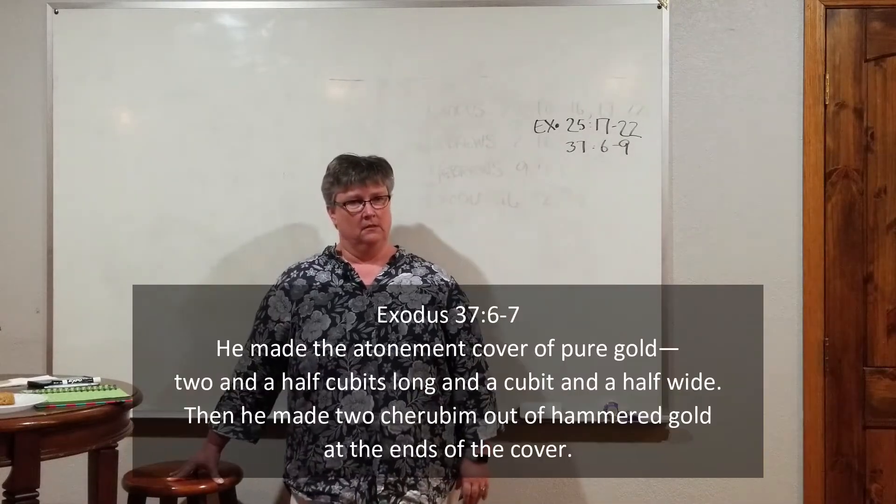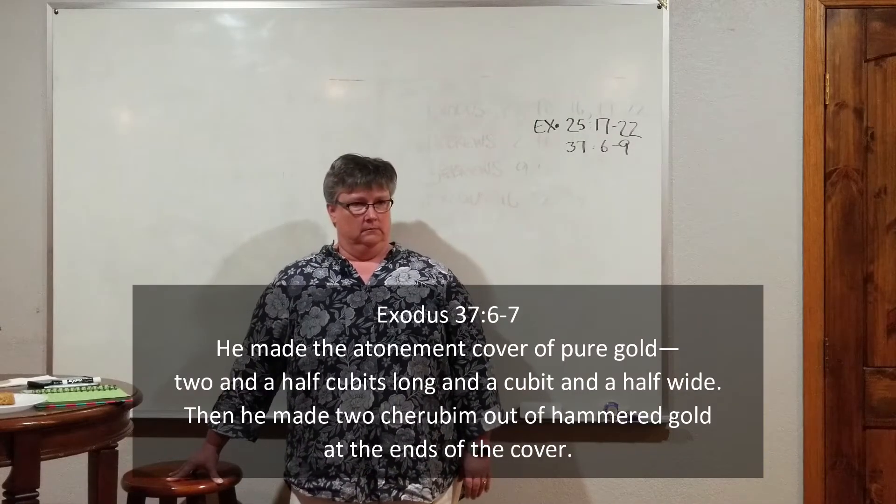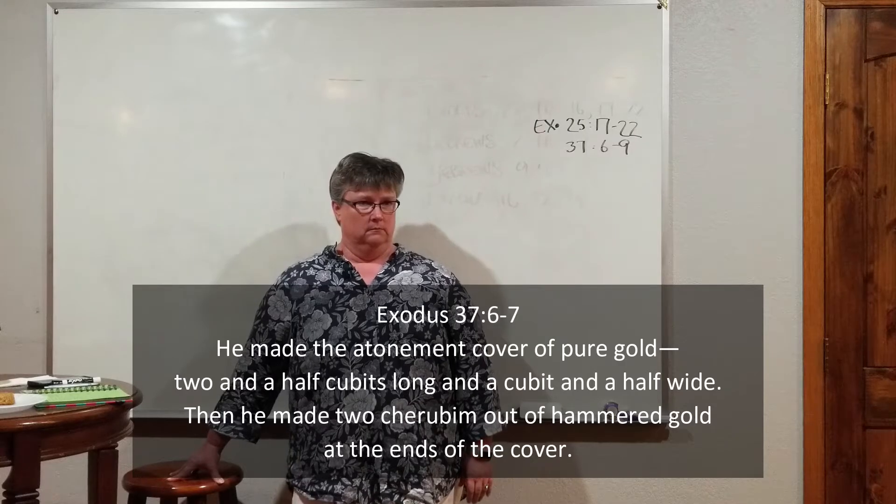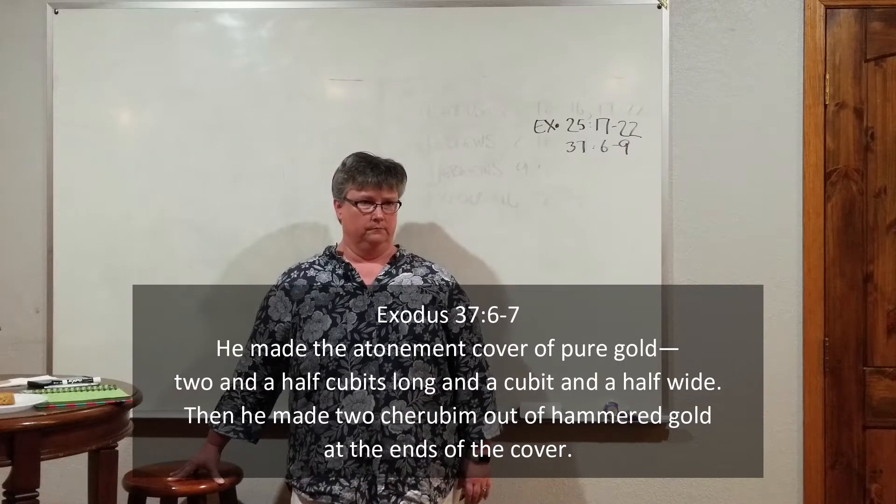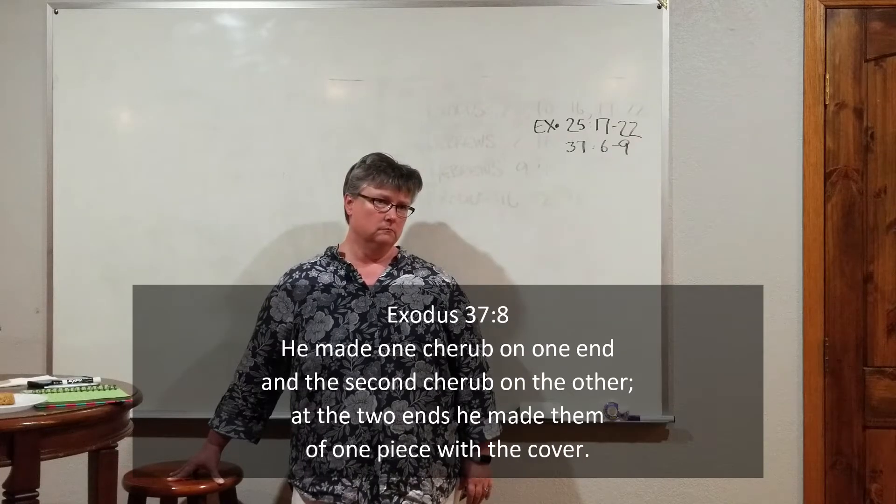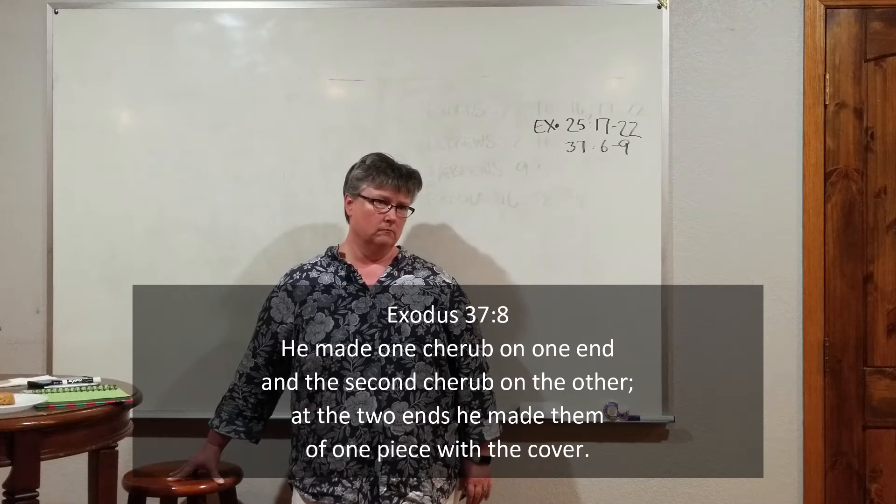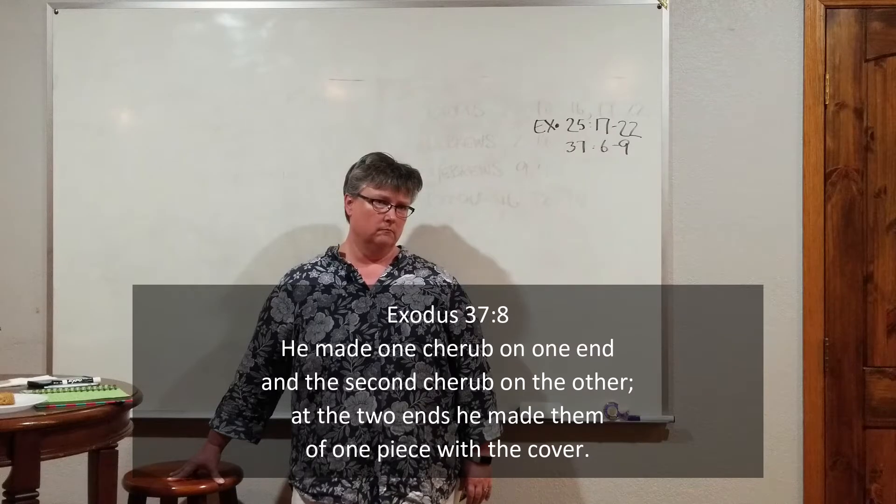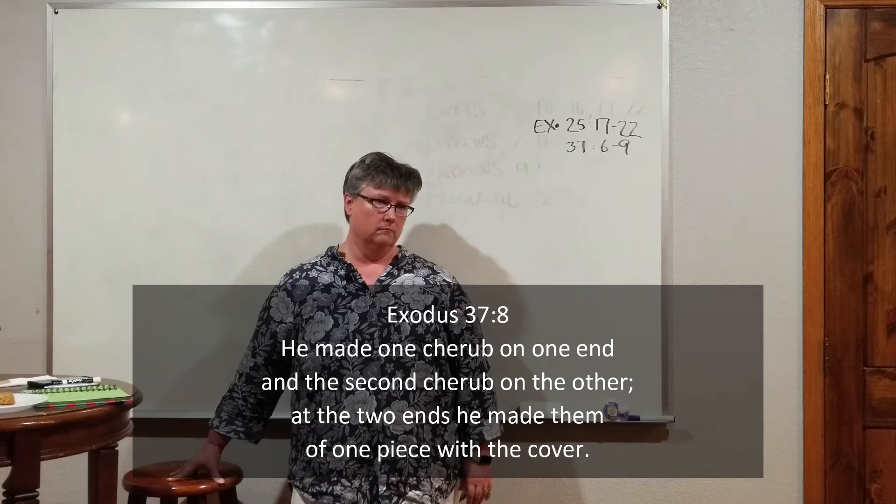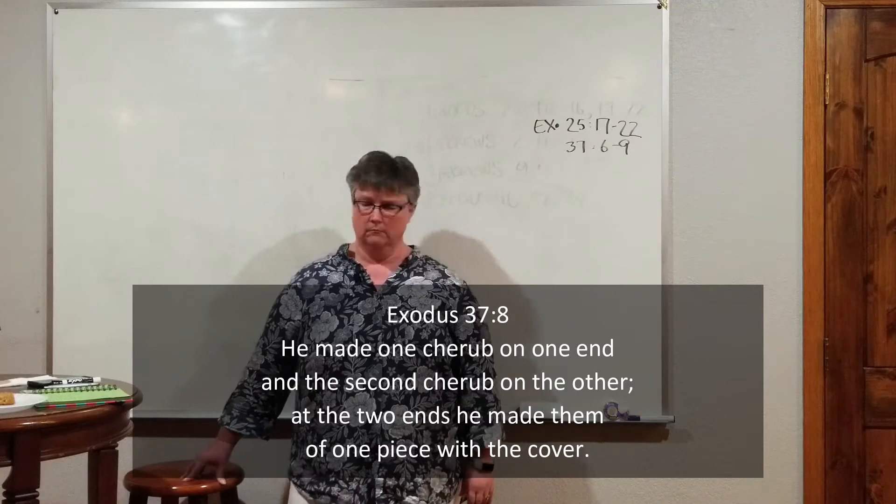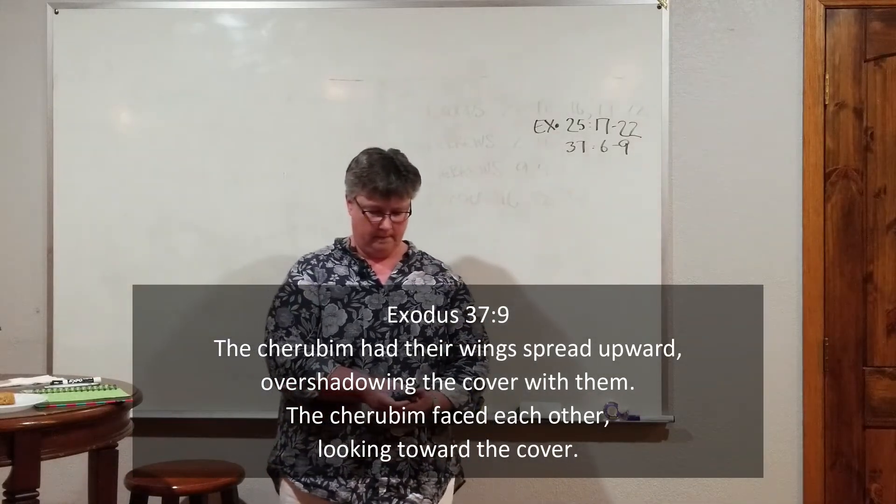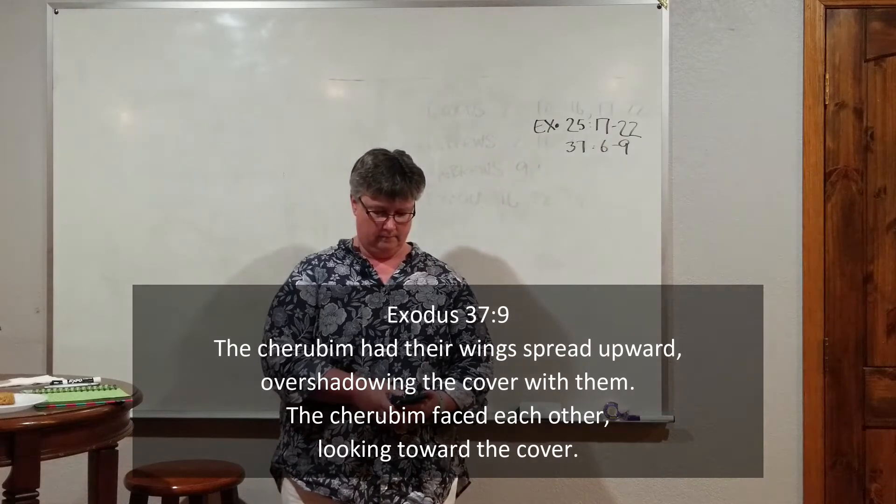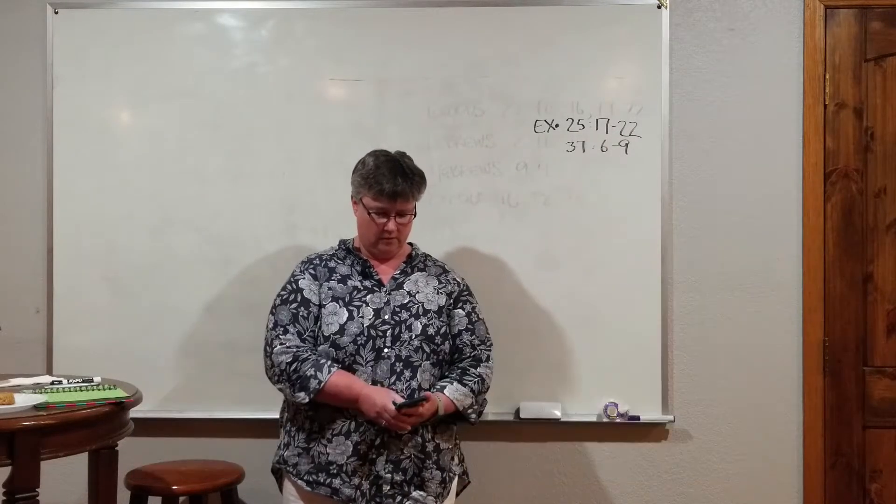Exodus 37:6-9 - He made the atonement cover of pure gold, two and a half cubits long and a cubit and a half wide. Then he made two cherubim out of hammered gold at the ends of the cover. He made one cherub on one end and the second cherub on the other. At the two ends, he made them of one piece with the cover. The cherubim had their wings spread upward, overshadowing the cover with them. The cherubim faced each other looking toward the cover.